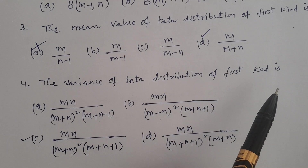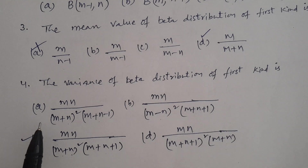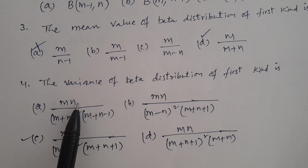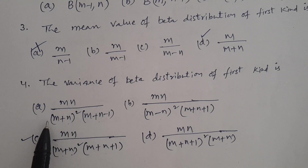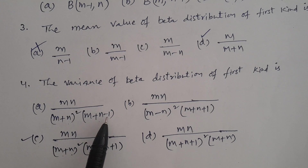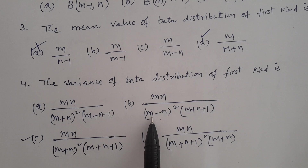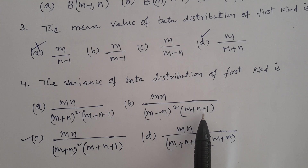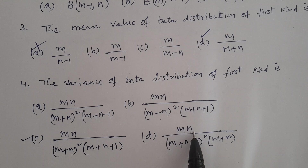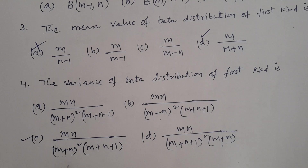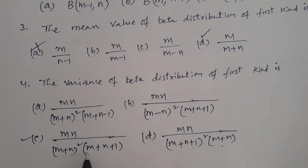Question number 4: The variance of beta distribution of first kind. Options: A — mn/(m+n)² · (m+n-1) [first form]; B — mn/(m-n)² · (m+n+1); C — mn/(m+n)² · (m+n+1); D — mn/(m+n+1)² · (m+n). The correct answer is Option C: mn/(m+n)² · (m+n+1).